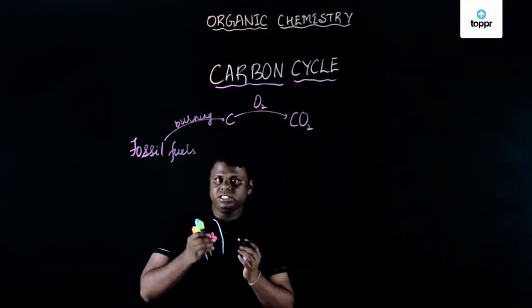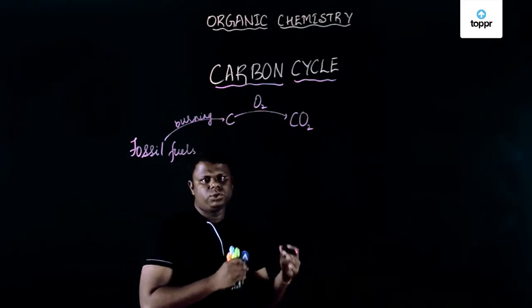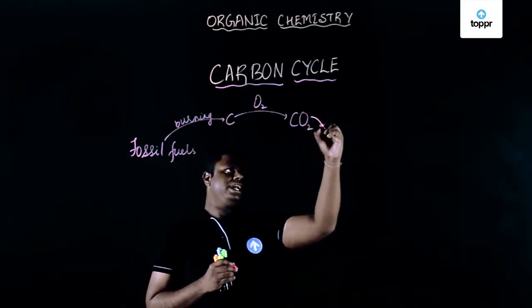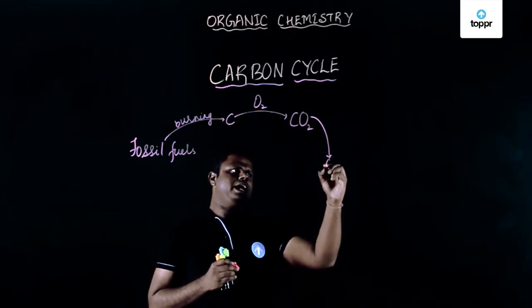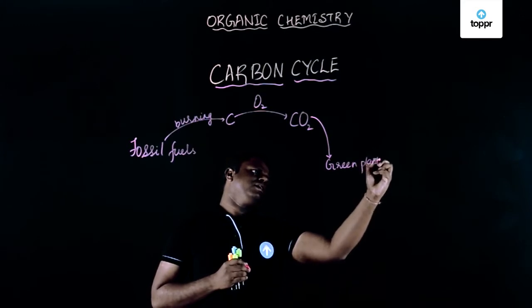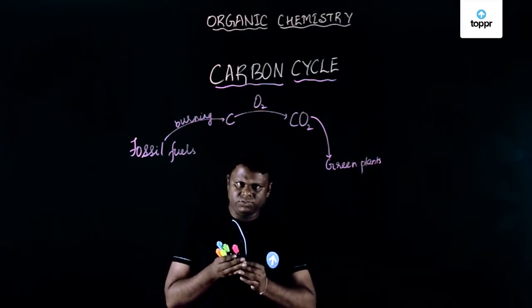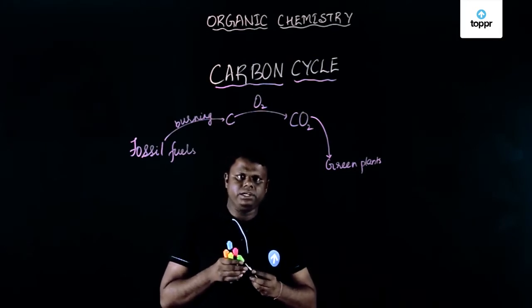We already know about a process called photosynthesis. Carbon dioxide is taken in by green plants. These green plants prepare their food by a process called photosynthesis using a pigment called chlorophyll.